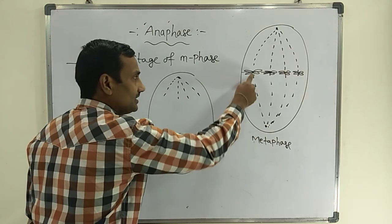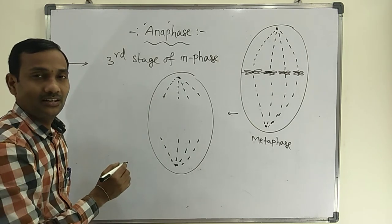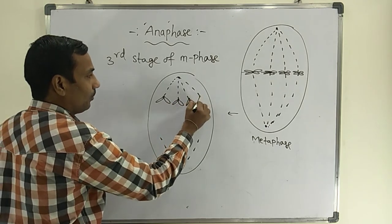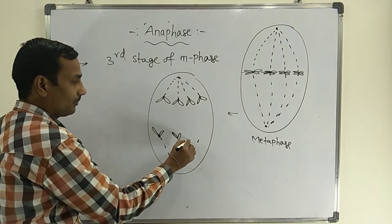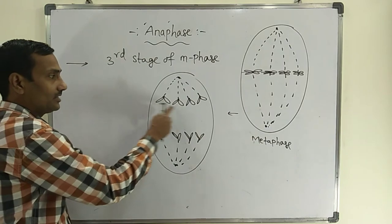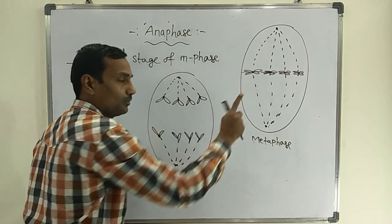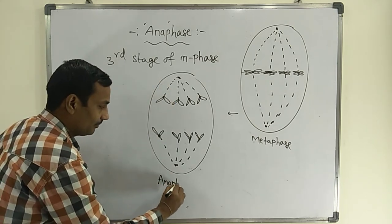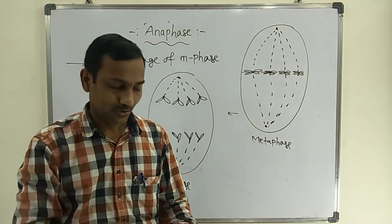In metaphase, one chromosome has two DNAs, but in anaphase, after movement, each chromosome consists of only one DNA or one chromatid. So eight daughter chromosomes are formed. The major difference: in metaphase one chromosome has two DNAs, but in anaphase one chromosome consists of only one DNA.